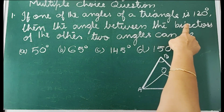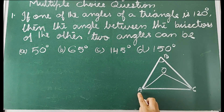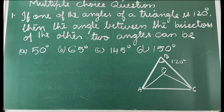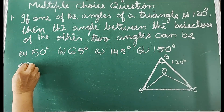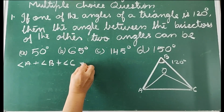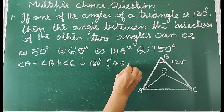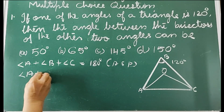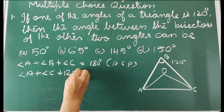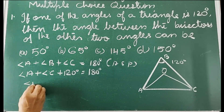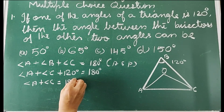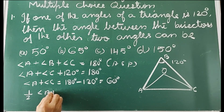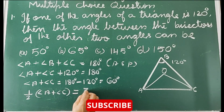If one of the angles of a triangle is 120°, let us consider triangle ABC where angle B is 120°. From the figure, we know angle A + angle B + angle C = 180° by the angle sum property. Since angle B = 120°, angle A + angle C = 180° − 120° = 60°. So, half of (angle A + angle C) = 30°.